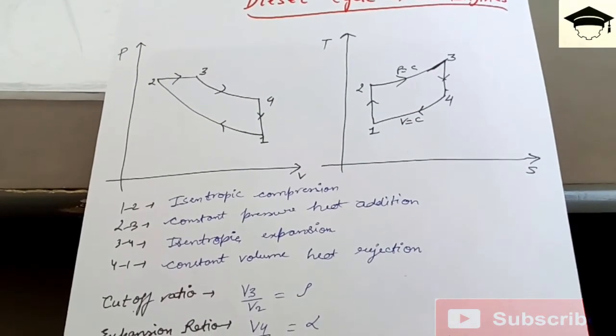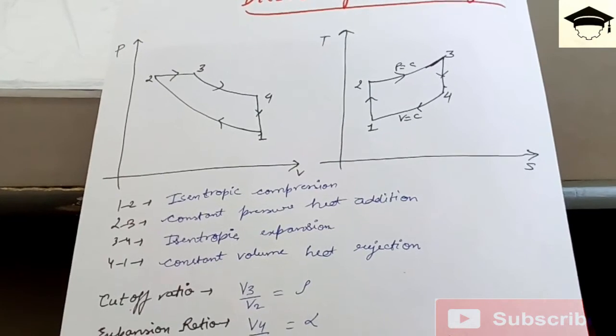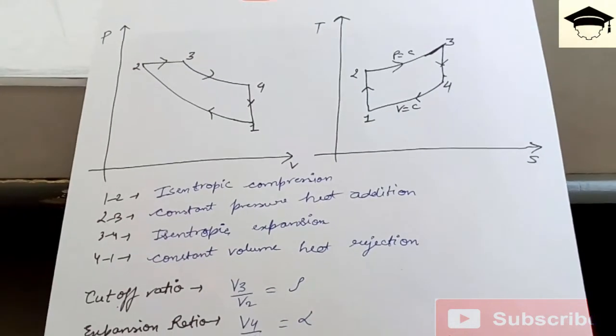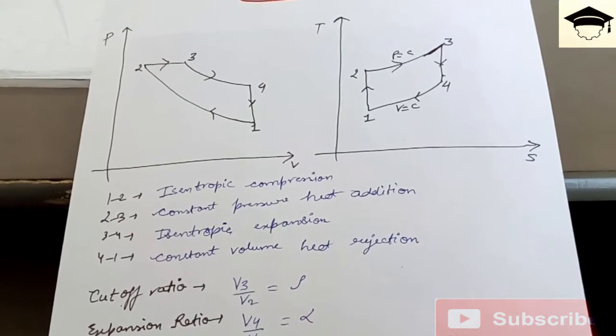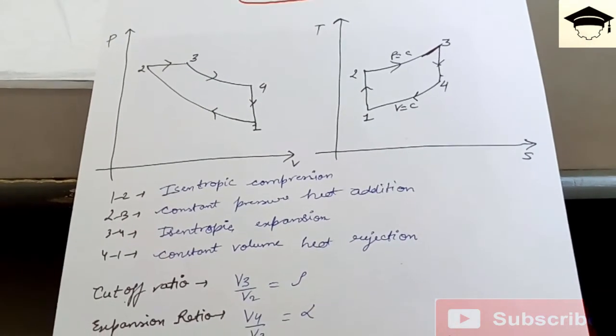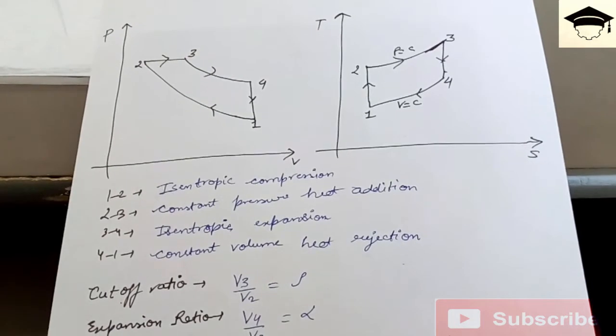3 to 4 is isentropic expansion process, 4 to 1 is constant volume heat rejection. There are three terms: cutoff ratio is the volume V3 upon V2, denoted by ρ (rho).